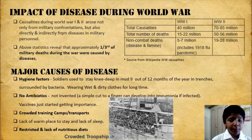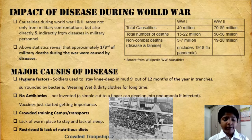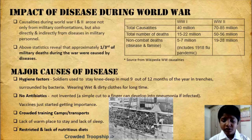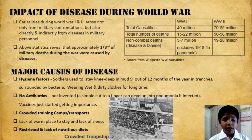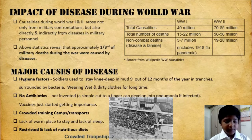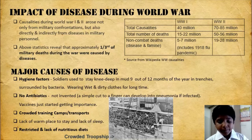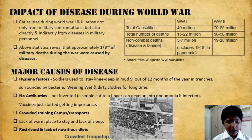These statistics reveal that approximately one-third of military deaths during the war were caused by disease. Major causes of disease include hygiene factors: soldiers used to stay knee-deep in mud 9 out of 12 months of the year in trenches surrounded by bacteria, wearing wet and dirty clothes for a long time. There were no antibiotics — a simple cut to a finger could develop into pneumonia if infected. Vaccines were just starting to gain importance. Other causes include crowded training camps and transports, lack of warm places to sleep, and restricted and lack of nutritious diets.